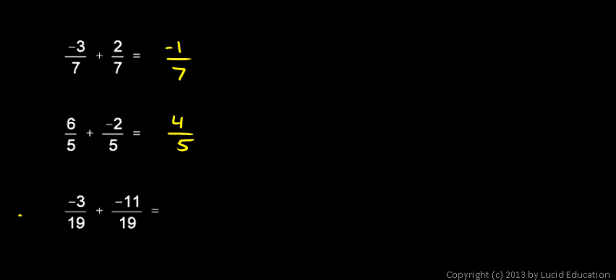And on the bottom here, I have negative 3 19ths and negative 11 19ths. I'm adding two negative numbers, so the result will be negative, and I can take my 3 and my 11 and add those and then put the negative sign on. So negative 3 and negative 11 gives me negative 14. So negative 3 19ths and negative 11 19ths is negative 14 19ths.